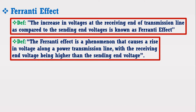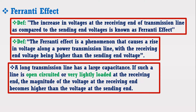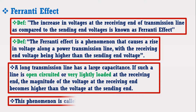A long transmission line has a large capacitance. If such a line is open-circuited or very lightly loaded at the receiving end, the magnitude of the voltage at the receiving end becomes higher than the voltage at the sending end. This phenomena is called Ferrenti effect.